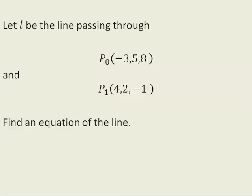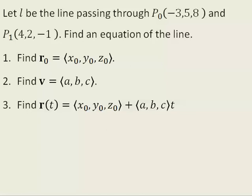Let l be the line passing through p-naught and p-one. Find an equation of the line. Here is our strategy. We will find our starting position, find the vector describing movement, and then put the two together to get the parameterization of the line.